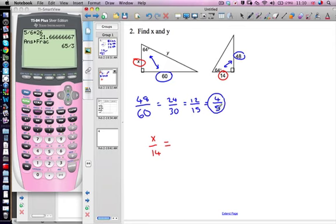This 5 came from my 60. It came from my biggest triangle. So I'm going to put it on the top: 5 over 4.